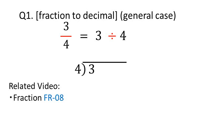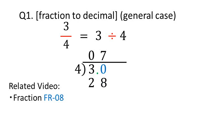Consider 3. How many 4s can fit into 3? There are 0 fours in 3. Since 3 is a whole number, we can place a decimal point at the right end. There is no digit in tenths, so we can place a 0 there. Now consider 30. How many 4s can fit into 30? There are 7 fours in 30. 4 times 7 is 28. Subtract 28 from 30, which is 2.